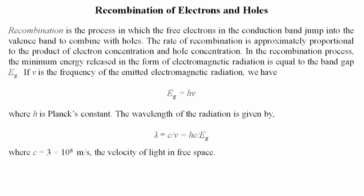Recombination is the process in which free electrons in the conduction band jump into the valence band to combine with holes. The rate of recombination is approximately proportional to the product of electron concentration and hole concentration. The minimum energy released in the form of electromagnetic radiation is equal to the band gap EG. If ν is the frequency of emitted electromagnetic radiation, then EG equals hν, where h is Planck's constant. The wavelength of the radiation is given by λ equals c over ν, or hc over EG, where c is the velocity of light in free space.